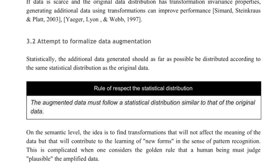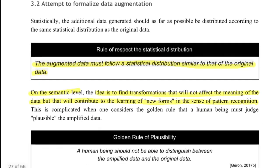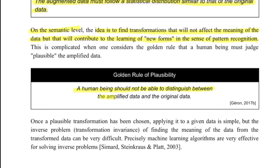Before the techniques, the author mentions certain rules to keep in mind. First, the augmented data must follow a statistical distribution similar to that of the original dataset. Second, on the semantic level, transformations should not affect the meaning of the data but should contribute to learning new forms in terms of pattern recognition. Third — called the golden rule of plausibility — a human should not be able to distinguish between the amplified data and the original data.